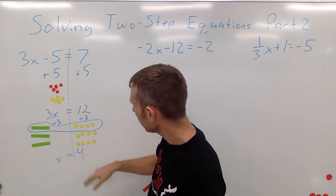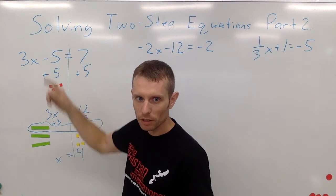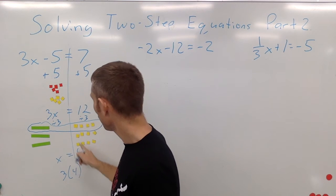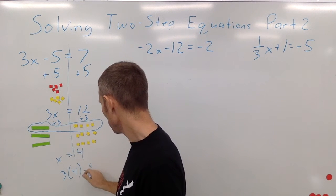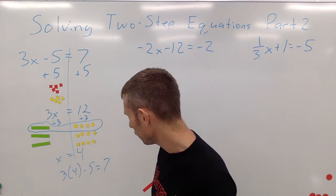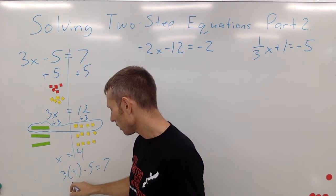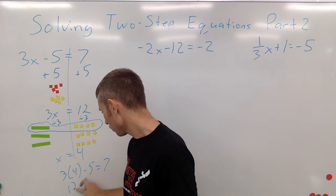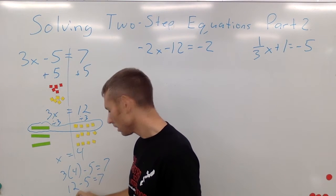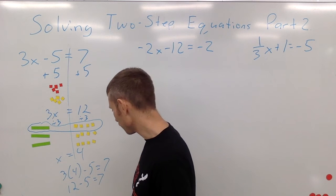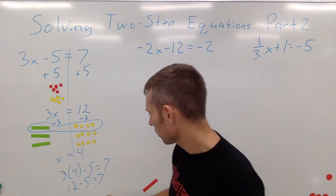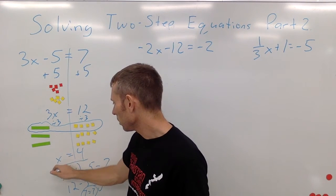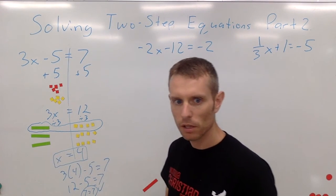To check this, we take our answer and plug it back into the original equation: 3 times 4 minus 5 should equal 7. Following the order of operations, 3 times 4 is 12, and 12 minus 5 equals 7. That's true — 7 equals 7 — so x equals 4 is the correct answer.